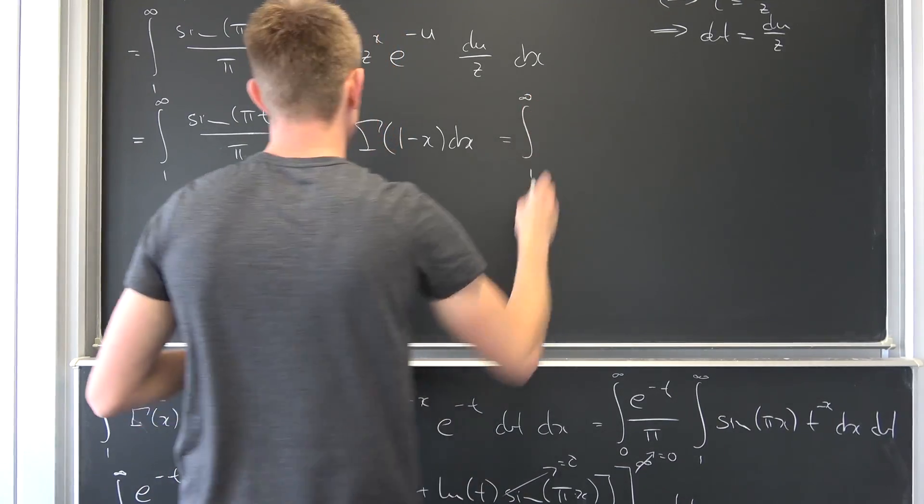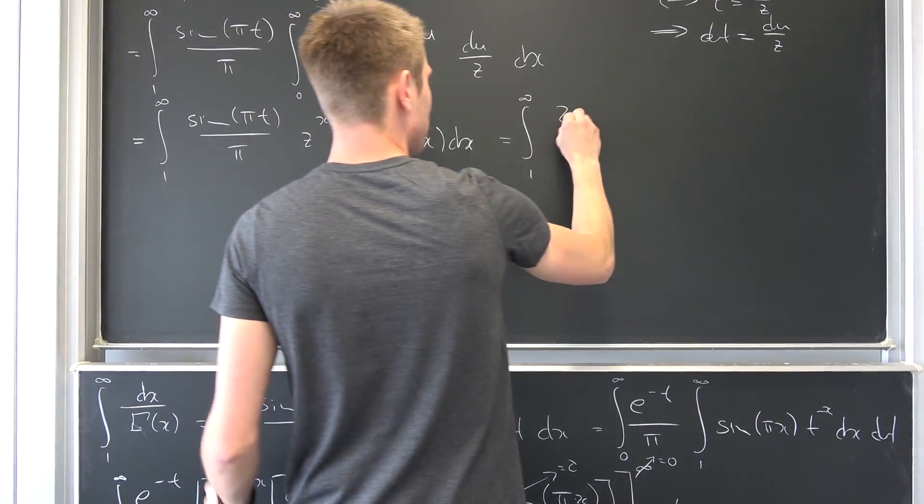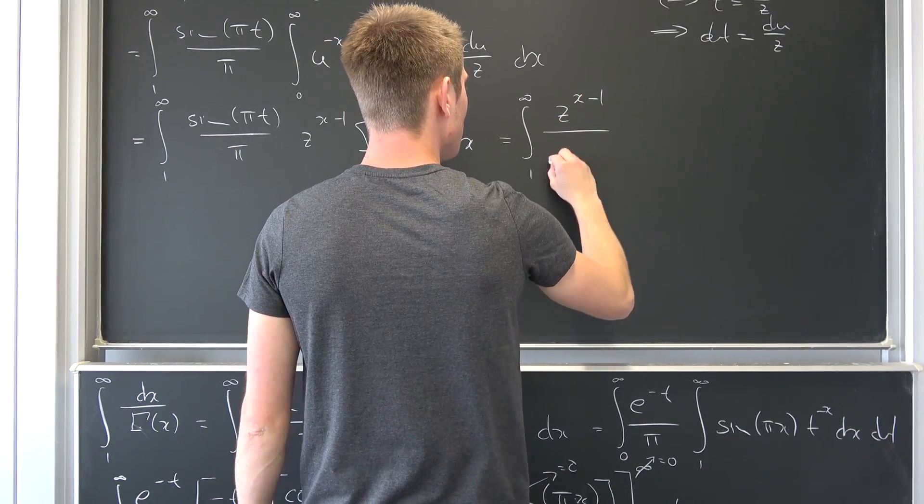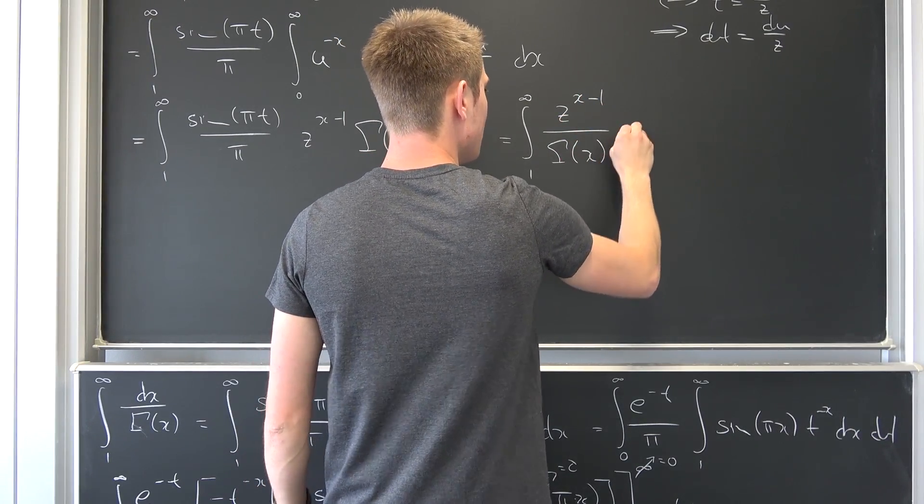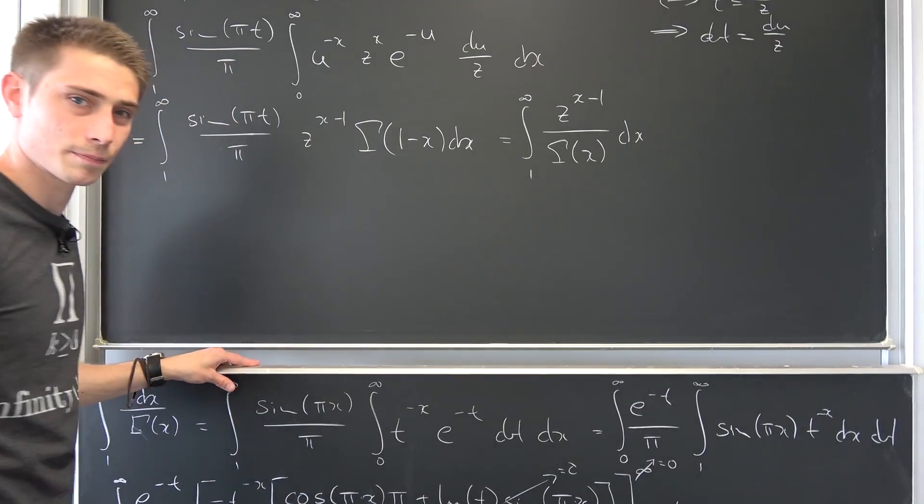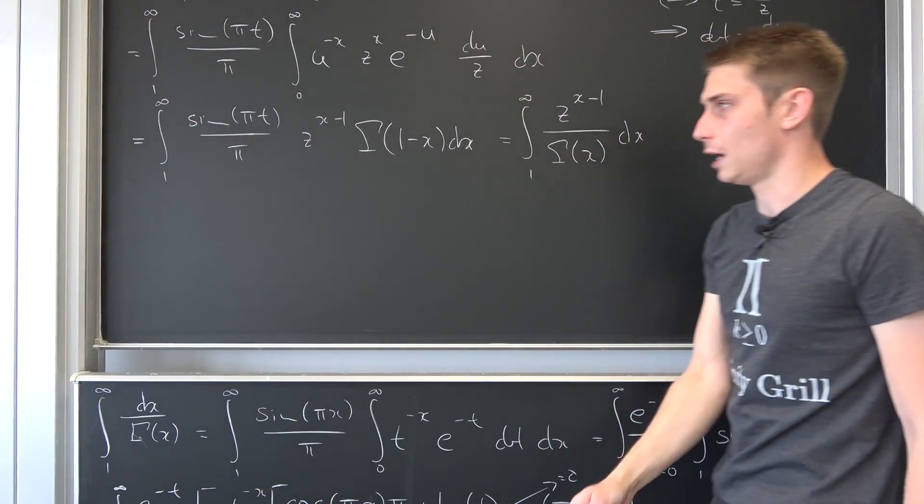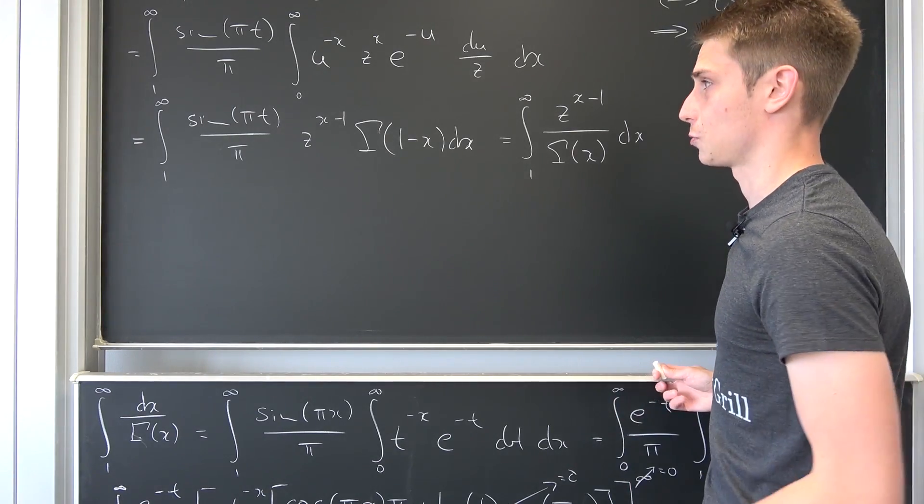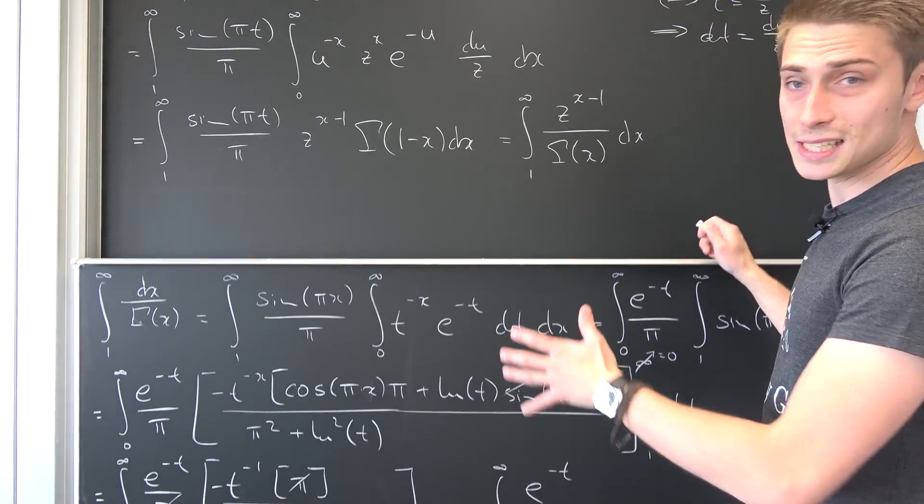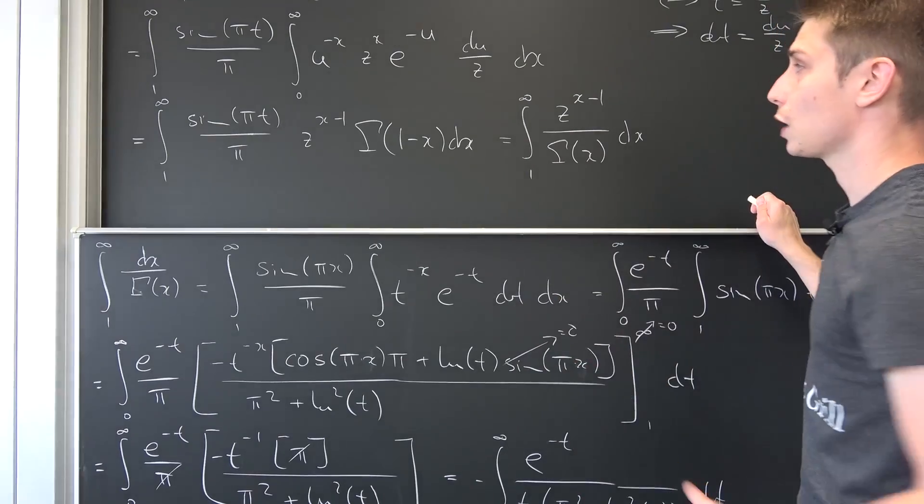This is going to be the integral from one to infinity of z to the x minus one power over gamma of x integrated with respect to x. We did something wrong right now, and I did a lot of things wrong these days.